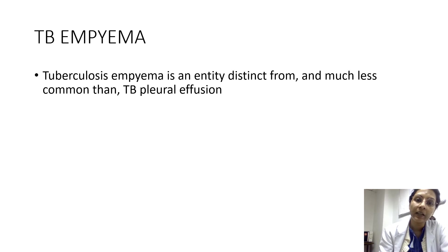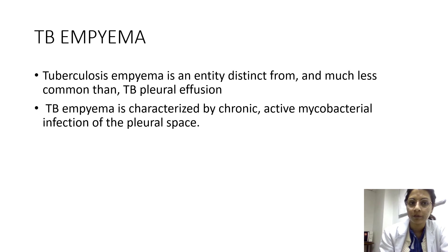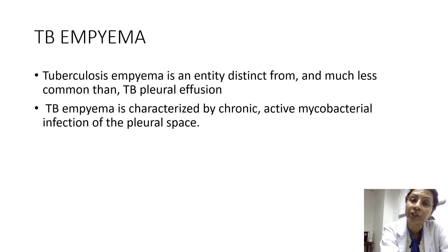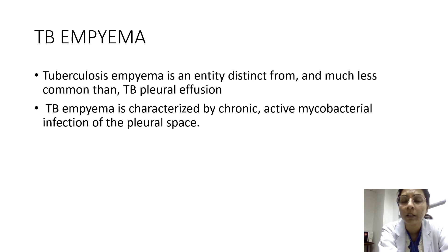Coming to tubercular empyema — empyema is collection of pus in the pleural cavity. In cases where pleural effusion remains undiagnosed or becomes secondarily infected, patients can present with tubercular empyema. It is a distinct entity, much less common than TB pleural effusion, characterized by chronic active mycobacterial infection of the pleural space — differing from pleural effusion, which is mostly a hypersensitivity reaction. It is more common in immunosuppressed patients such as those with HIV/AIDS, chronic renal failure, or on long-term immunosuppressive treatment.